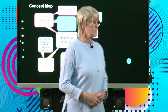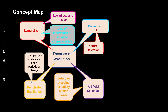Welcome back from the ad break. Let's get on with our lesson. Now we're going to have a look at Lamarckism — a theory proposed by Lamarck, who put forward two laws: the law of use and disuse, and the law of inheritance of acquired characteristics.